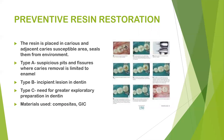In preventive resin restoration, resin is placed in carious and adjacent caries-susceptible areas, sealing them from the environment. Type A involves suspicious pits and fissures where caries removal is limited only to enamel. In Type B there is an incipient lesion in dentin that is confined and small. In Type C there is a need for greater exploratory preparation in dentin.